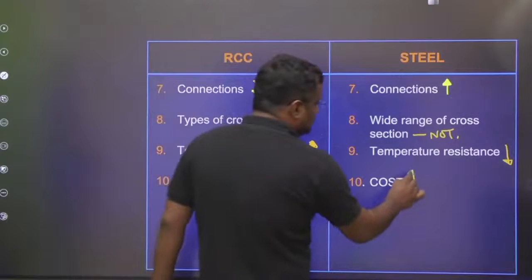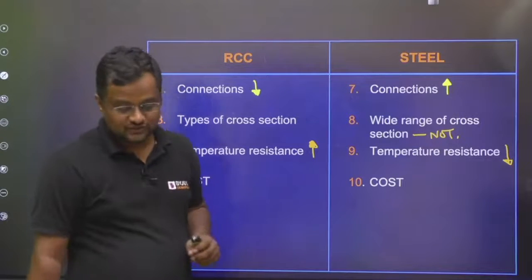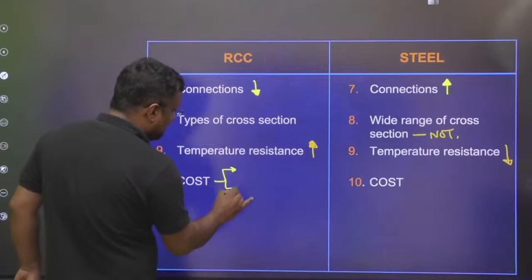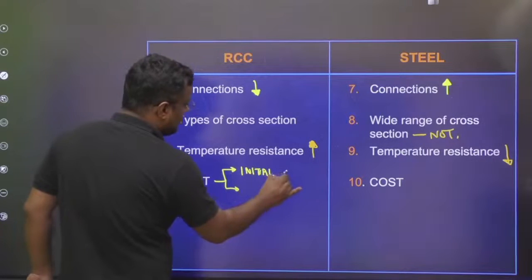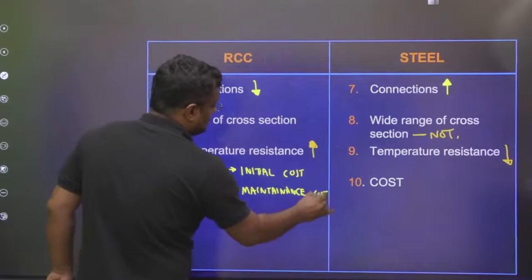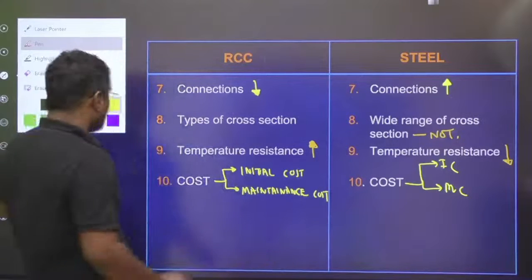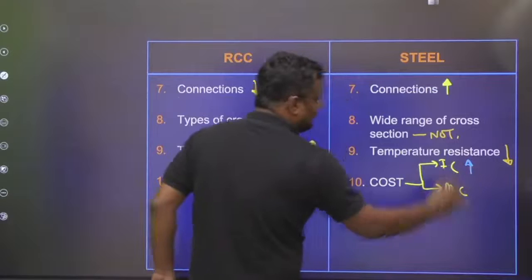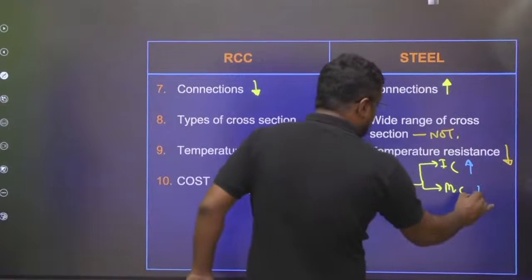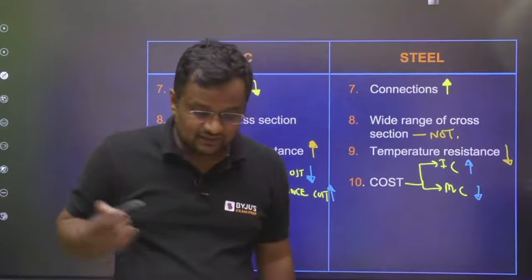Regarding cost: the cost of RCC is very less compared to steel, but we should distinguish initial cost and maintenance cost. The initial cost of RCC is quite low, while the initial cost of steel is obviously higher. However, since steel is very durable, its maintenance cost is lesser. The maintenance cost of RCC is more because it is not very easy to repair.